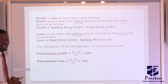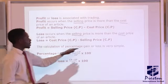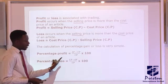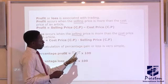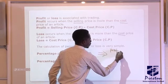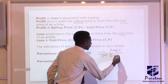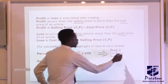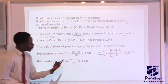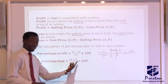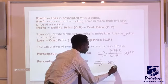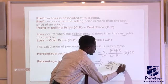Now moving to percentage gain or loss — the calculation is very simple. The formula for calculating percentage profit or gain is: gain over cost price, times 100. Since gain is the same as selling price minus cost price, we write it as profit over cost price, times 100. For percentage loss, it is cost price minus selling price — which equals loss — over cost price, times 100.